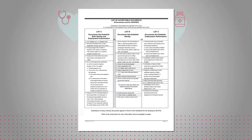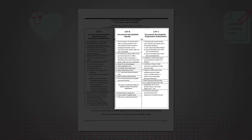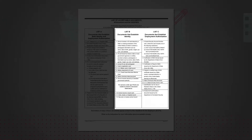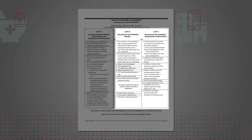For a single document that will establish both your identity and your employment authorization, you may select one unexpired item from List A. You may decide instead to choose a combination of unexpired items from List B and C. Your List B document will establish your identity, and your List C document will establish your employment authorization. As such, you may not select two items from List B or two items from List C.